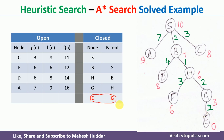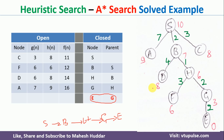To get the path, we backtrack: the last node is E, the parent of E is G, G's parent is H, H's parent is B, and B's parent is S. So the path is S → B → H → G → E. In this video, I have explained how the A* search algorithm works with a simple numerical example. I hope the concept is clear. If you like the video, do like and share with your friends, and press the subscribe button for more videos.